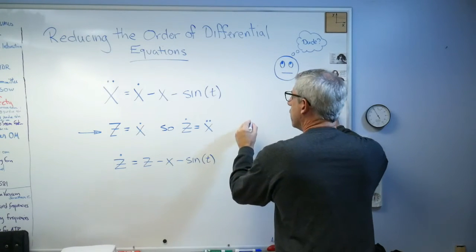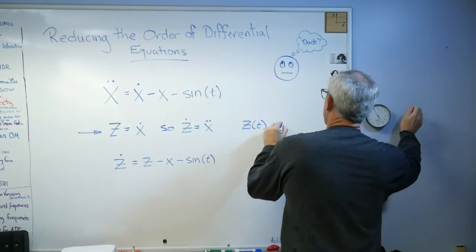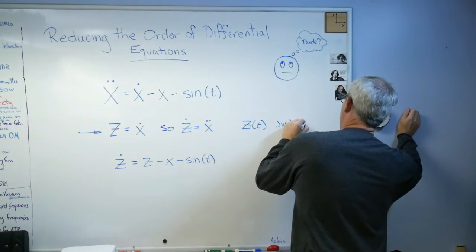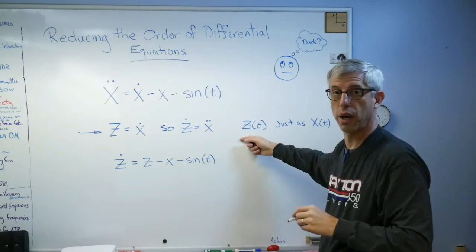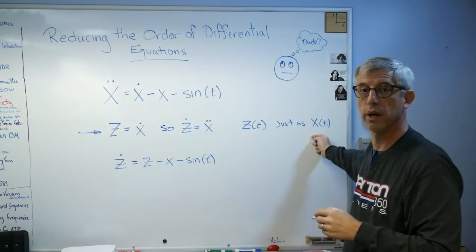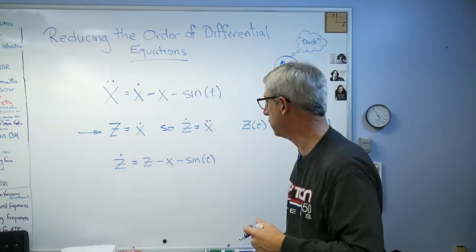And remember what we've got here, z is z of t just as we've got x of t. This is a function of time just like this was. Again, we're trying to find functions that make this true. That's the idea of solving a differential equation.